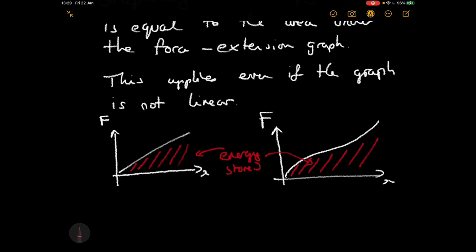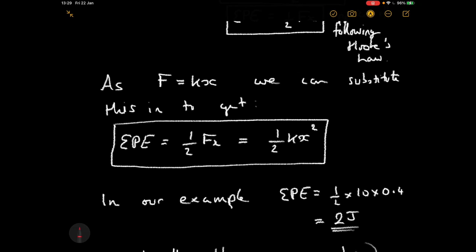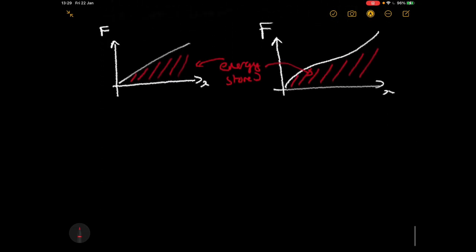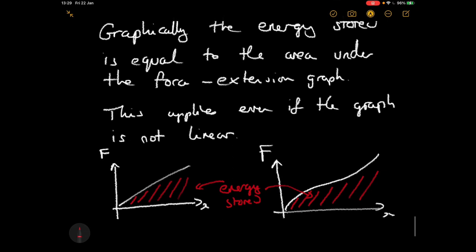We can't use the equations directly for a non-linear graph because the average force concept doesn't apply in the same way and there's no spring constant. But we'll look at what we can learn from those graphs. This is how we work out the work done and the elastic potential energy stored, and we can use this to convert between elastic potential energy and kinetic energy or gravitational potential energy — we'll look at those examples a little later.